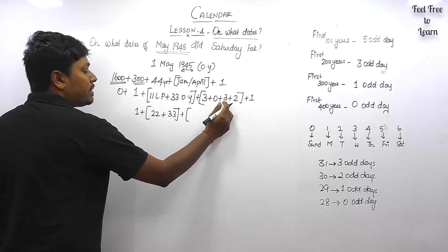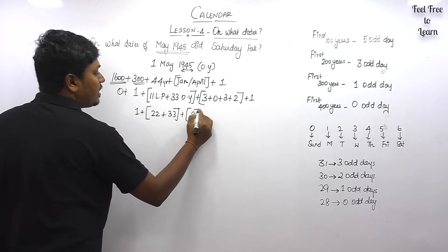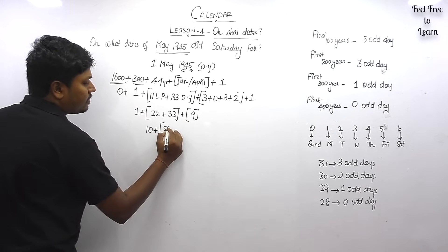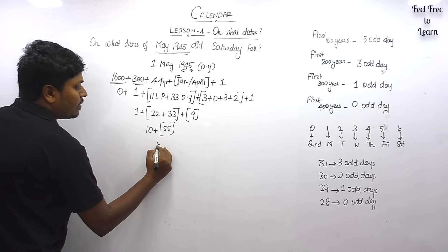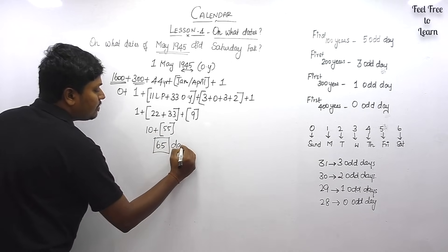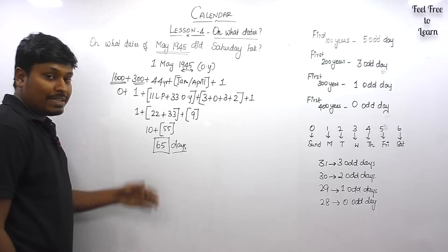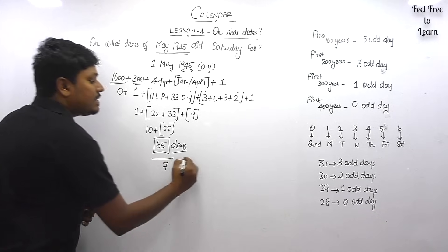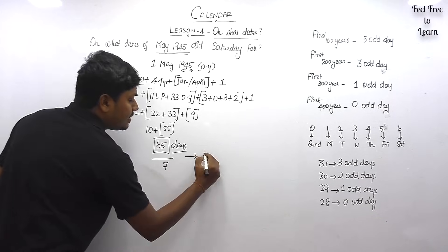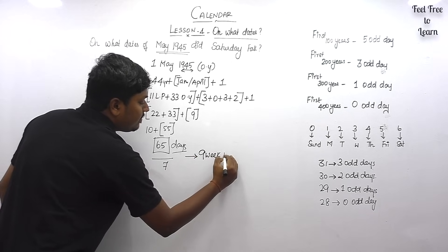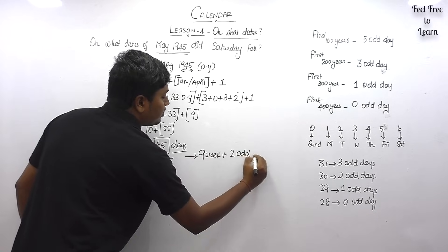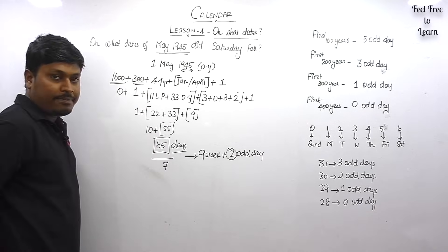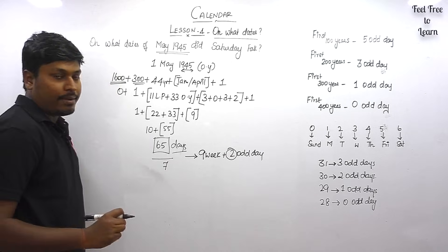Adding all values: 3 + 3 + 2 + 1 = 9, and 22 + 33 = 55. Total: 9 + 55 + 1 = 65 days. Divide by 7: 9 × 7 = 63, remainder is 2 odd days. So 1st May 1945 falls on the 2nd odd day.